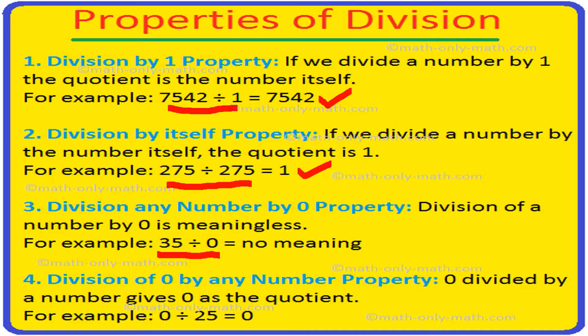Fourth is division of 0 by any number: 0 divided by any number gives 0 as the quotient. Keep these properties in mind so you can find the answers to these types of questions in a fraction of the time.